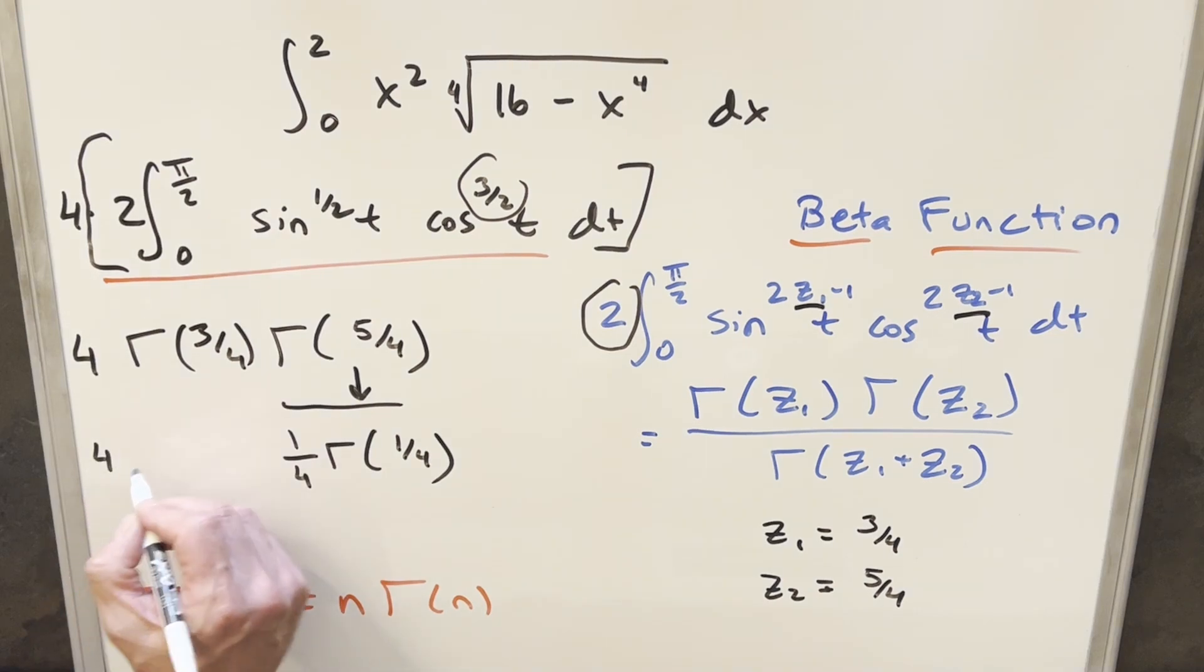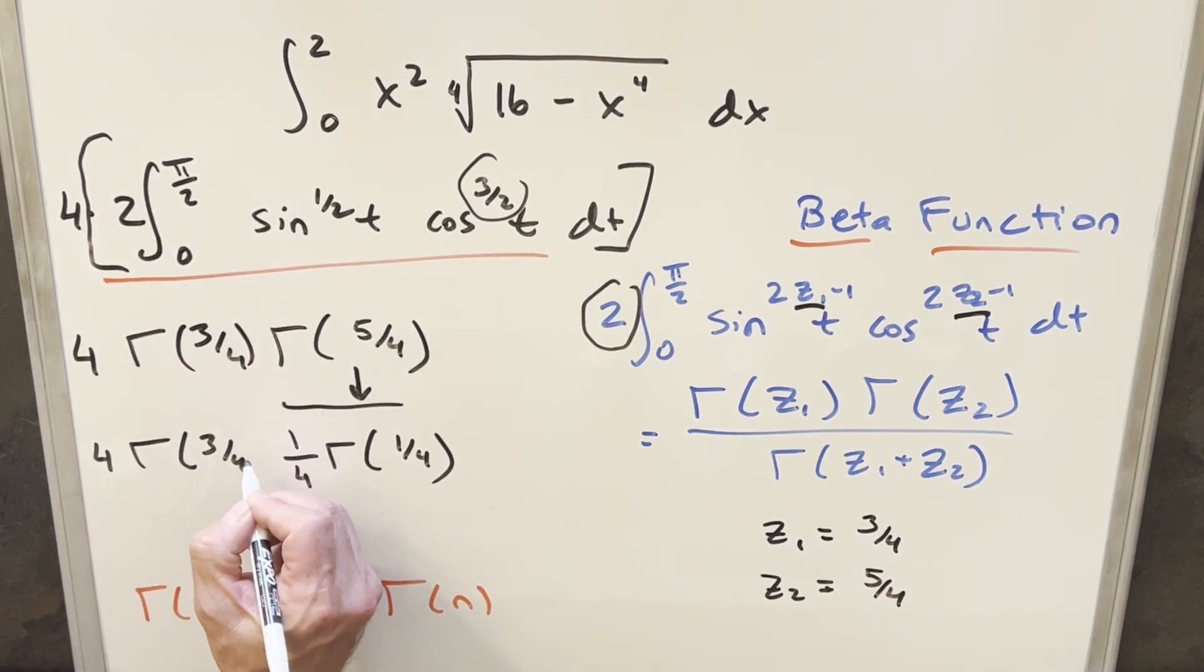And we'll just bring all this other stuff down. So then what's going to happen is we have 4 times 1 fourth. So I can actually just cancel that here. And now we're just looking at gamma of 3 fourths times gamma of 1 fourth.